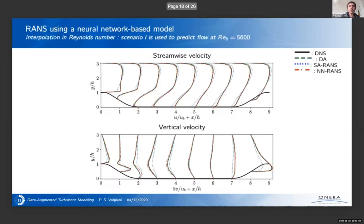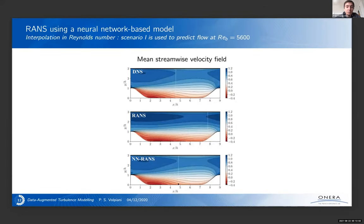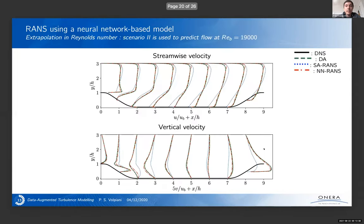And then if you go for the first scenario, so here I show you the interpolation in Reynolds number. Reynolds number is 5600 on top. We show the streamwise velocity and on bottom the vertical velocity. And then in black solid line, we have the DNS and in green line, we have the data assimilated solution. You see that they are really on top of each other. So meaning that the assimilation works really well. And then in blue, we have the classical Spalart-Allmaras RANS solution. And in red, we have our RANS solution augmented with the neural network using our neural network. And we see that the result is really good. It compares really well between the neural network based RANS and the DNS for both images. Then if you compare also the reattachment position, we see that it's really close to the DNS.